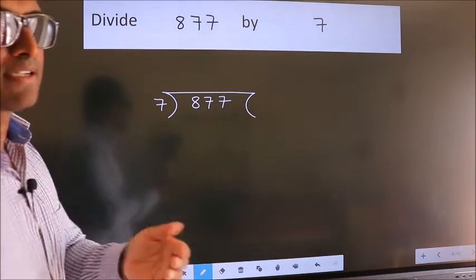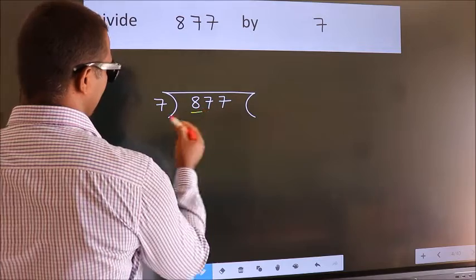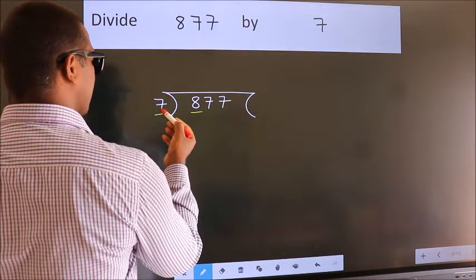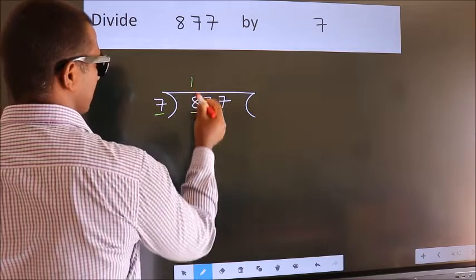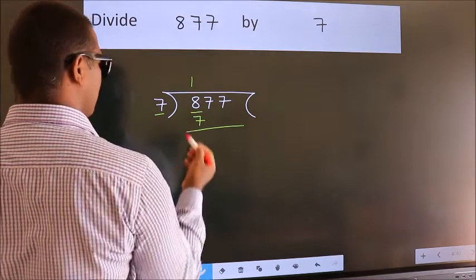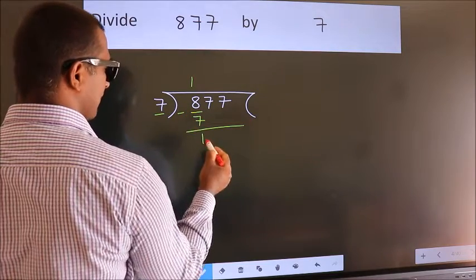Next, here we have 8, here 7. A number close to 8 in 7 table is 7×1, which is 7. Now we should subtract. We get 1.